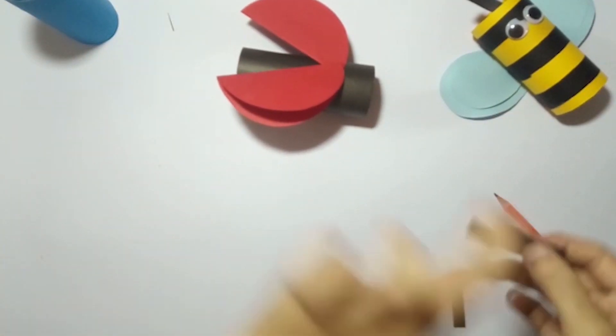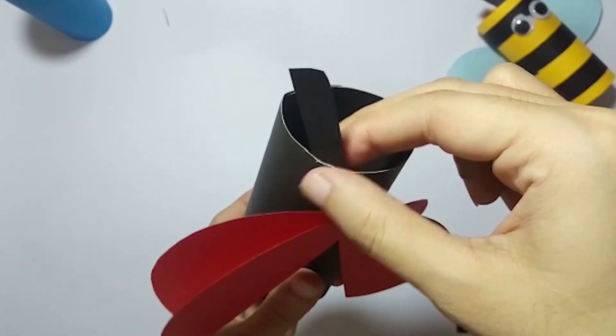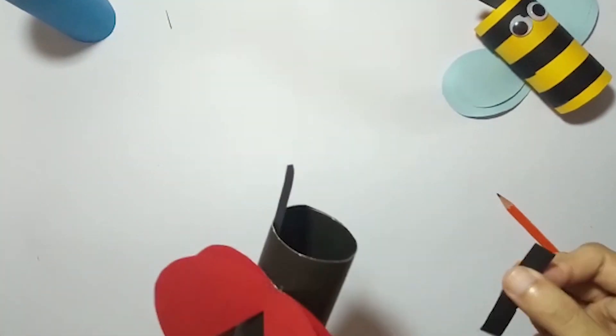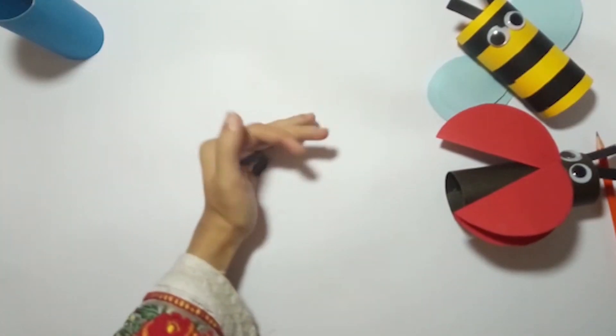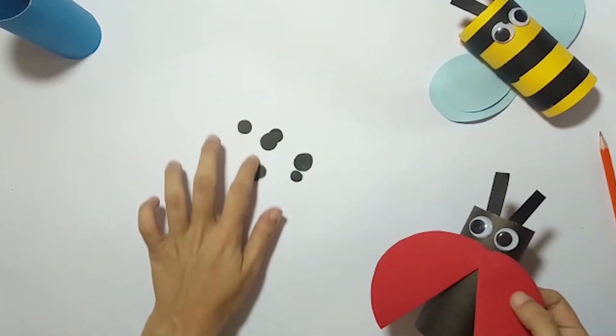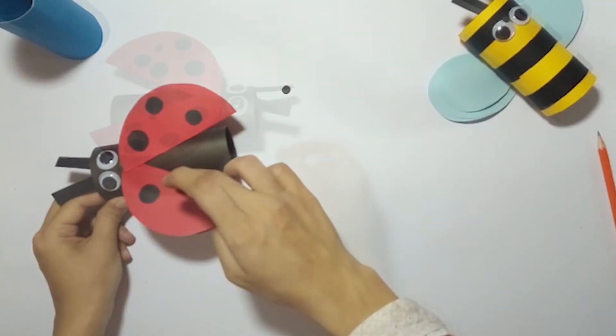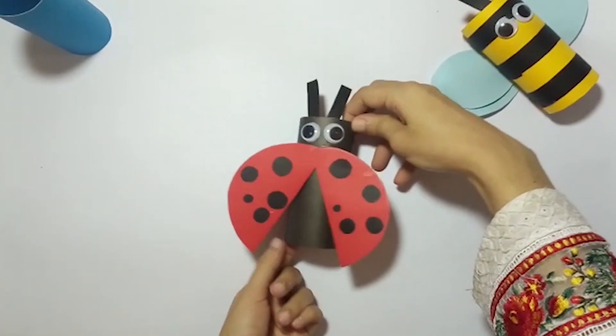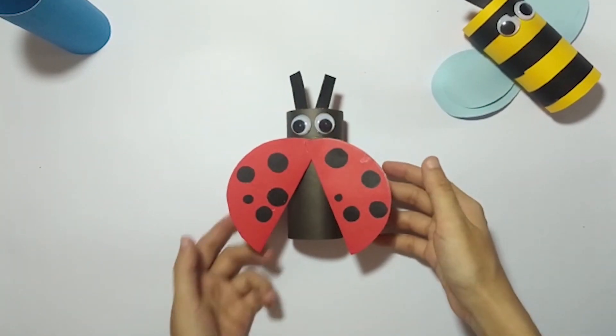Make its antenna and eyes. Now cut small circles of black paper and paste randomly on its red wings. Make sure your antennas and wings should be on the same side. Look, a ladybug is ready!